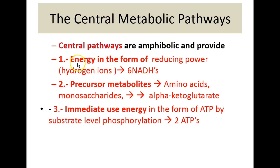As a central metabolic pathway, the TCA is also amphibolic. As a catabolic pathway, it provides energy in the form of reducing power — six NADHs have been gathered from two pyruvates, which created two acetyl coenzyme A's, each going through the cycle once, producing six NADHs per glucose molecule. Additionally, precursor metabolites — especially alpha-ketoglutarate for amino acid synthesis — and two ATPs have been produced.